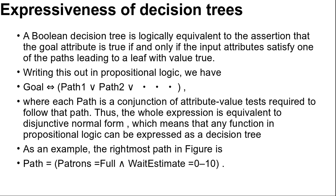Here is an example in the figure. There is a path equals patrons equals full disjunction weight estimates equals 0 to 10. For a wide variety of problems the decision tree format yields a nice result.